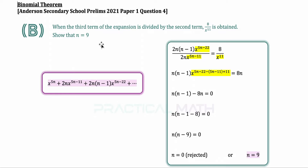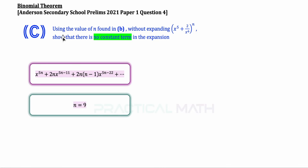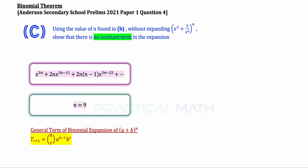That is the answer for part B. For part C, using n equals 9 and without doing any formal expansion, we show there is no constant term. We use the general term formula: term (r+1) equals nCr times a to the power of (n−r) times b to the power of r, which can describe any term in the expansion of (a+b)^n.